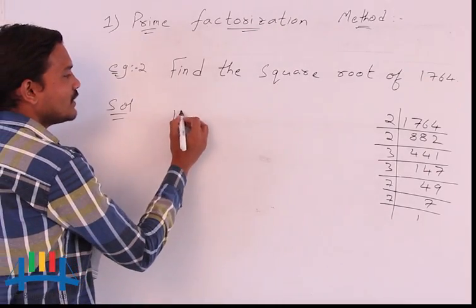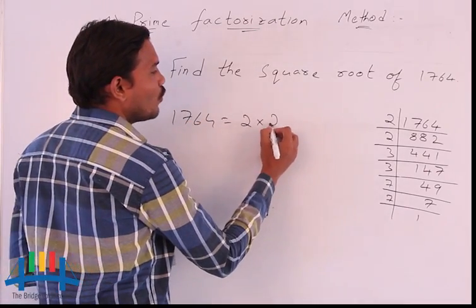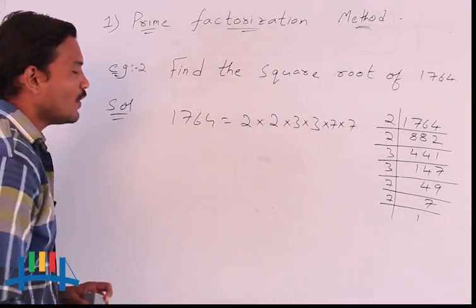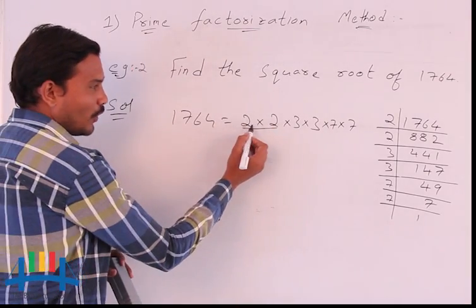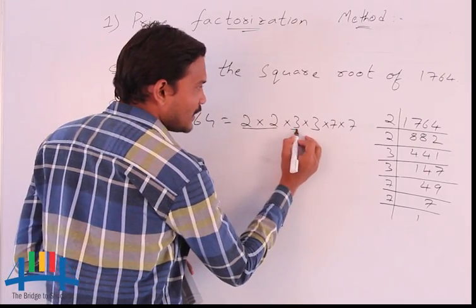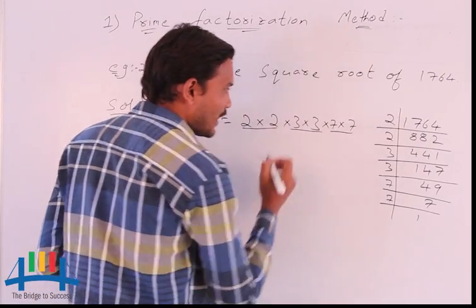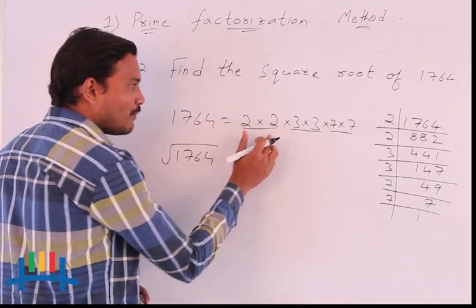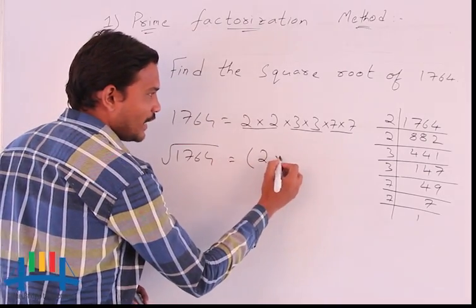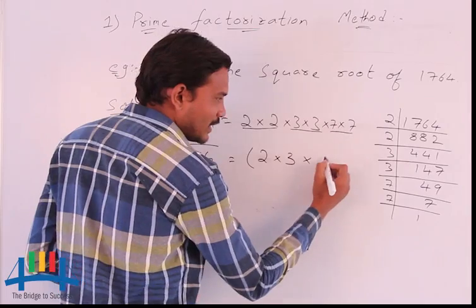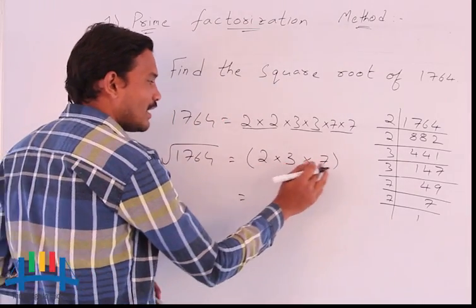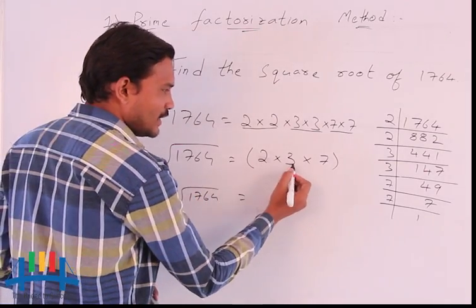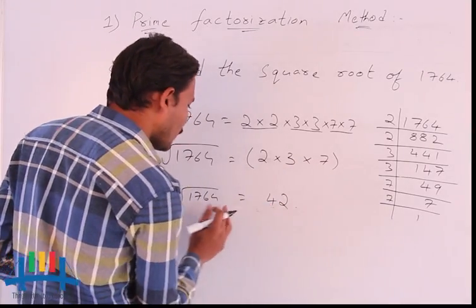I will write the factors: 1764 = 2 × 2 × 3 × 3 × 7 × 7. These are the factors. Now I am making the pairs of equal factors: 2 × 2 is one pair, 3 × 3 is another pair, and 7 × 7 is another pair. To find the square root, we consider only one number from each pair: 2, 3, and 7. Multiplying all these: 2 × 3 = 6, 6 × 7 = 42. So 42 is the square root of 1764.